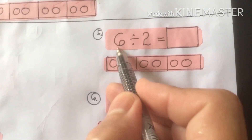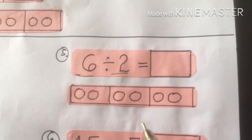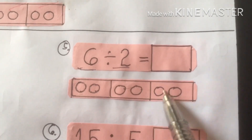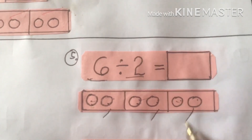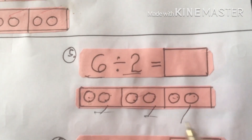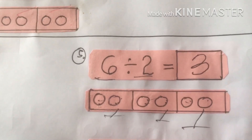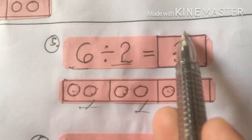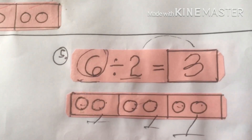Number 5: Dividend is 6, divisor is 2. So 6 divided by 2. Draw: 1, 2, 3, 4, 5, 6. Group by 2: 1–2, 1–2, 1–2. Count: 1, 2, 3. We write 3. Your quotient is 3. When you multiply 3 times 2, the answer is 6. That is the division process — division is inverse of multiplication.